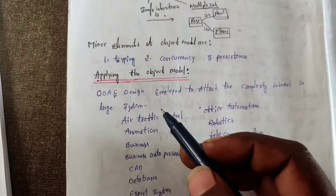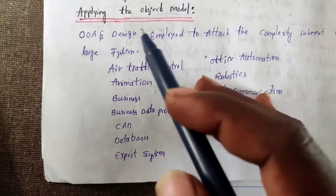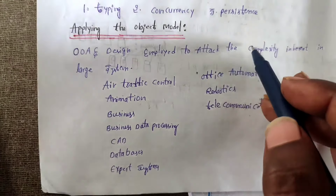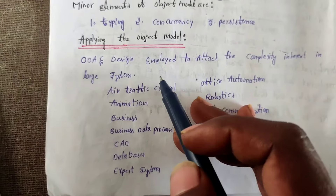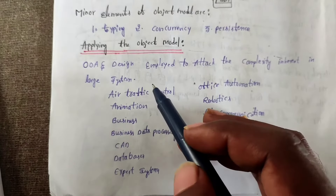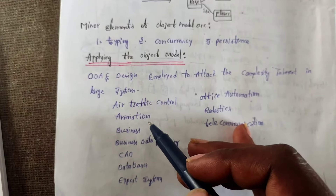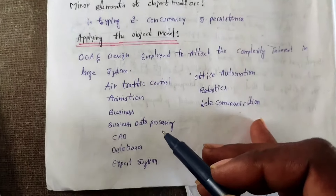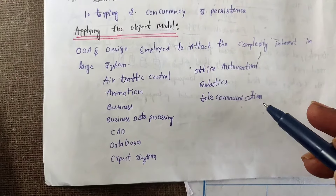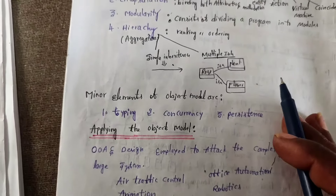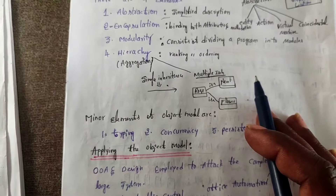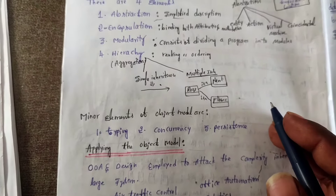The final topic is applying the object model. Applying the object model involves object-oriented analysis and object-oriented design, implying an attack on the complexity inherent in large systems. Application domains include air traffic control, animations, business data processing, CAD/CAM, databases, expert systems, office automation, robotics, and telecommunications. These are all topics covered under Object Oriented Analysis and Design, Unit 1.